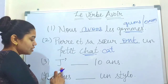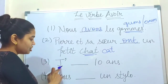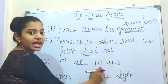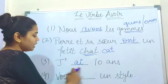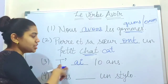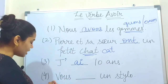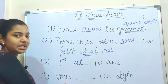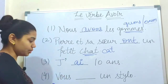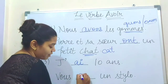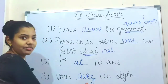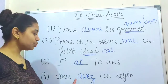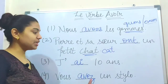The third sentence: j'___ dix ans — we use j'ai because of je. J'ai dix ans means 'I am ten years old.' The fourth sentence: vous ___ un stylo. Vous means 'you' in the formal form, so: vous avez un stylo, meaning 'you have a pen.'